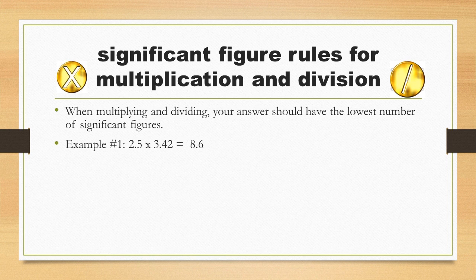Example 1: 2.5 times 3.42 equals 8.6. The answer is 8.6, rounded from the calculator reading 8.55. Why? 2.5 has 2 significant figures, while 3.42 has 3. Two is less than 3, so the answer has 2 significant figures.